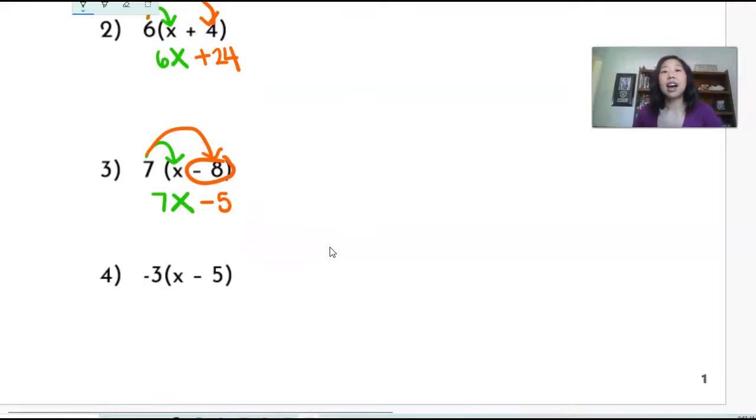And then lastly, I am going to rainbow. I have negative three times x minus five. So I'm going to rainbow or multiply negative three times x, which is going to get me negative 3x.